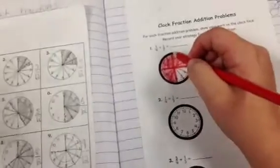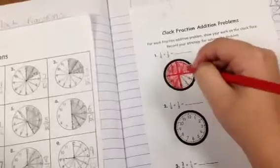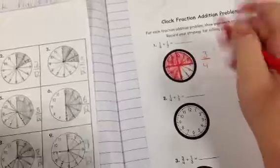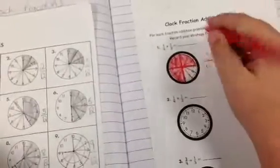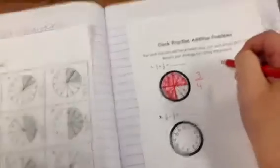Because I had split the clock up into four sections, and then I colored it in half, and then I colored in another thing. And I still had one section not colored in, and there was four sections, and that's how I got three-fourths. Okay. Thank you.